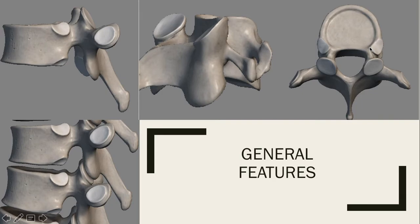We also have the inferior articular facet and process. Here is the inferior articular facet. Just like in the mandibular condyle, we had a process leading up to that condyle — the facet is just the surface where these bones meet together, but the process is that section of bone before we get to the facet. Make sure you keep those straight in your mind and know the difference between those two.